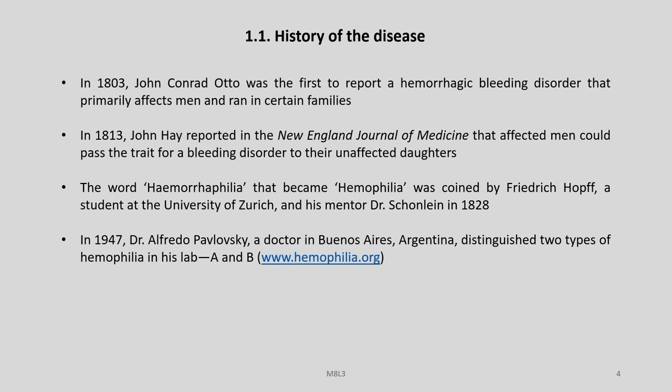Let us look into the history of this disease. In 1803, John Conrad Otto was the first to report a haemorrhagic bleeding disorder that primarily affects men and runs in certain families. In 1813, John Hay reported in the New England Journal of Medicine that affected men could pass the trait for a bleeding disorder to their unaffected daughters. The word Haemophilia was coined by Frederick Hopff, a student at the University of Zurich, and his mentor Dr. Schönlein in 1828.